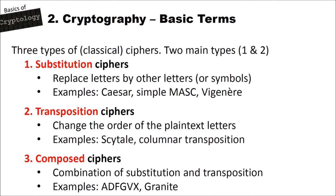There are three types of classical ciphers — two main types and an additional one. The first main type is substitution ciphers. Substitution ciphers replace letters by other letters or symbols. Examples for substitution ciphers include the Caesar cipher, the simple monoalphabetic substitution cipher, and the Vigenère cipher. We already had videos on all these three, so you may have a look at the classical cipher series on this channel.